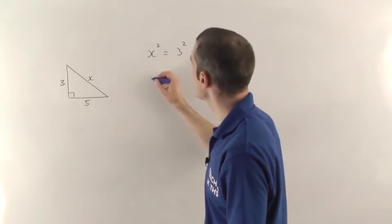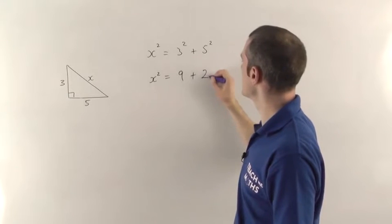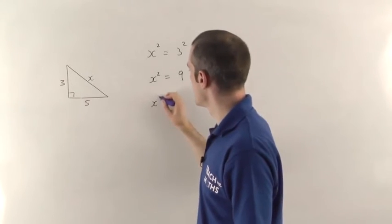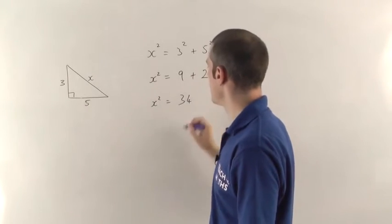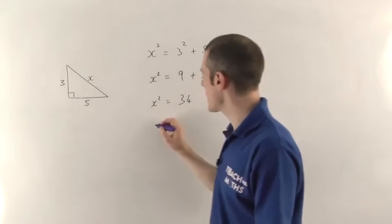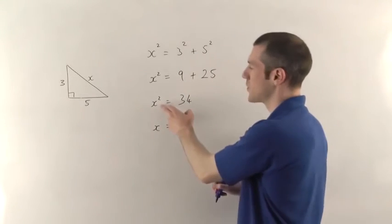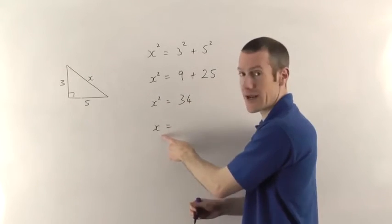Now in this case, that means that X squared is going to be 9 plus 25 which means 9 plus 25 gives you 34. Now if X squared is 34 and we want to get back and find out what X is, we do the opposite of squaring which is square rooting. So you need to square root both sides, that will tell you what X is.